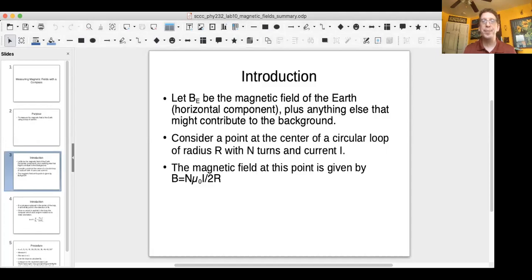It will have a current I. The magnetic field at the center of the coil is going to be capital N times mu naught. Again, mu naught is the permeability of free space, or 4 pi times 10 to the negative 7 Tesla meter per ampere. I is going to be the current divided by 2R, where R is the radius of the coil.